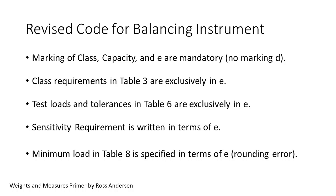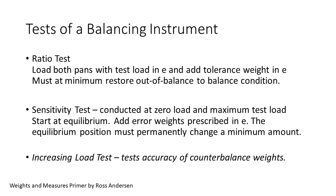Once we understand that E is actual weight embodied in the test weights, there should be no more confusion. There are two tests of the balancing instrument. The ratio test verifies the beam ratios. Both pans are loaded with equivalent test weights in E. The addition of the tolerance test weight in E must at least restore balance to any out-of-balance condition. The sensitivity test is conducted near zero load and at maximum test load. Starting at a balanced condition, the addition of error weights specified in E must result in a permanent change in the balance indicator. I contend that the increasing load test does not test the instrument accuracy, but rather the accuracy of the counterbalance weights.